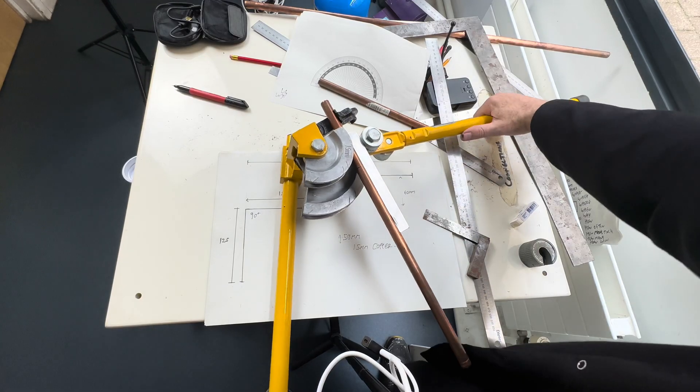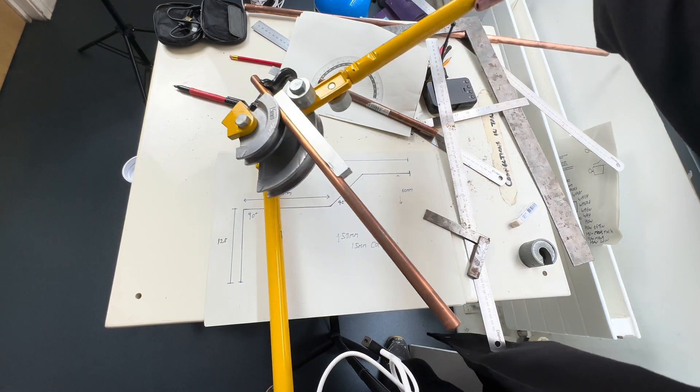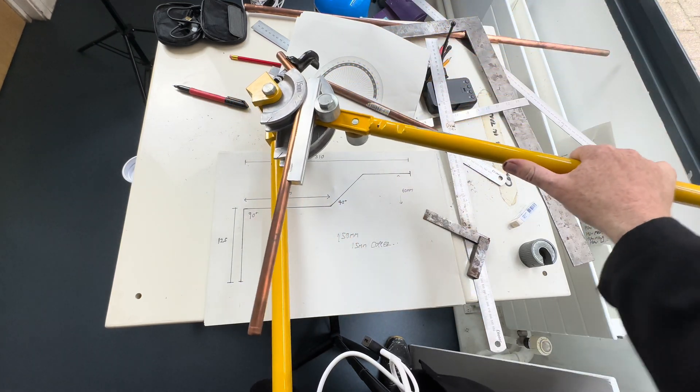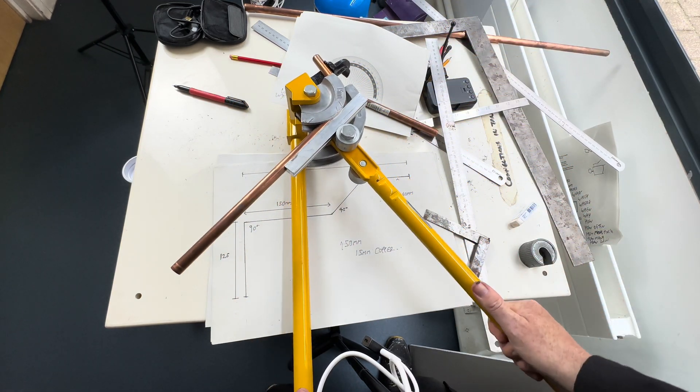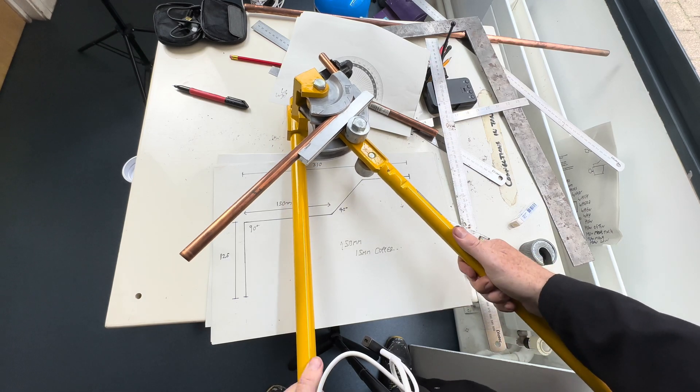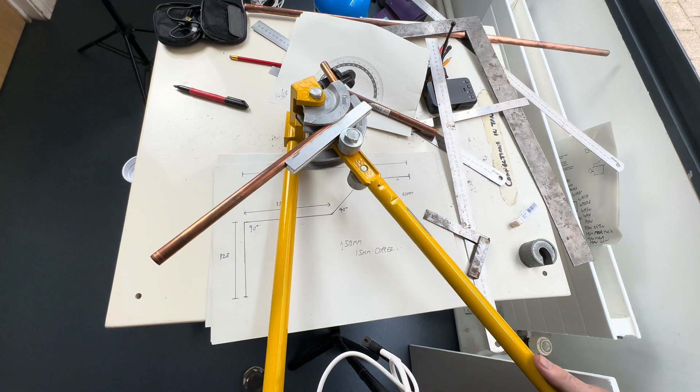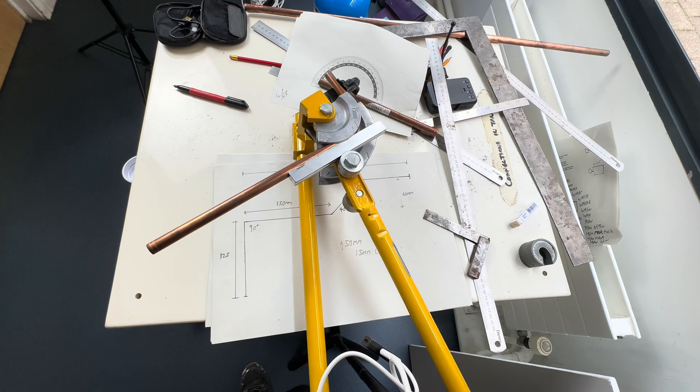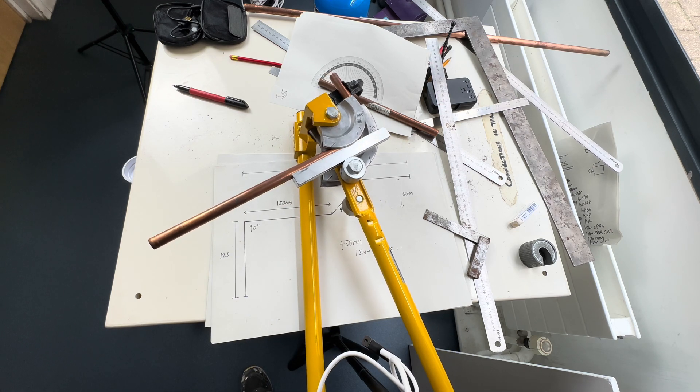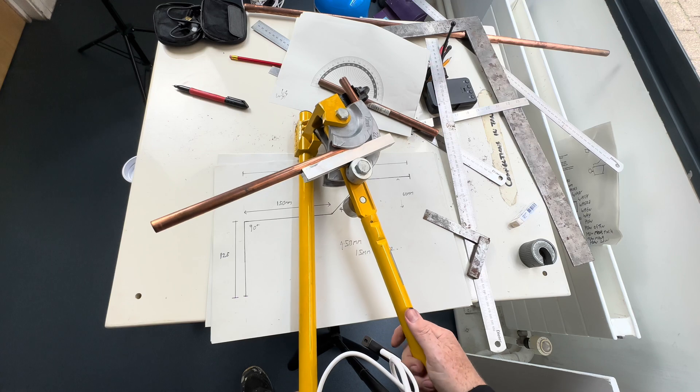We can now proceed to bend the pipe 90 degrees. Remember the marks on the bender are only a rough guide so you'll need to check with a square, especially if you are training for an assessment.